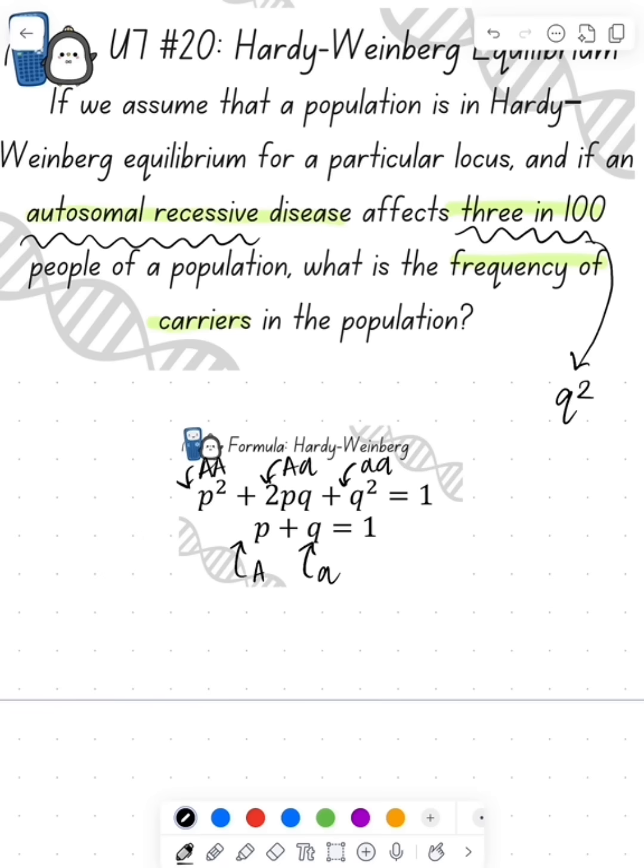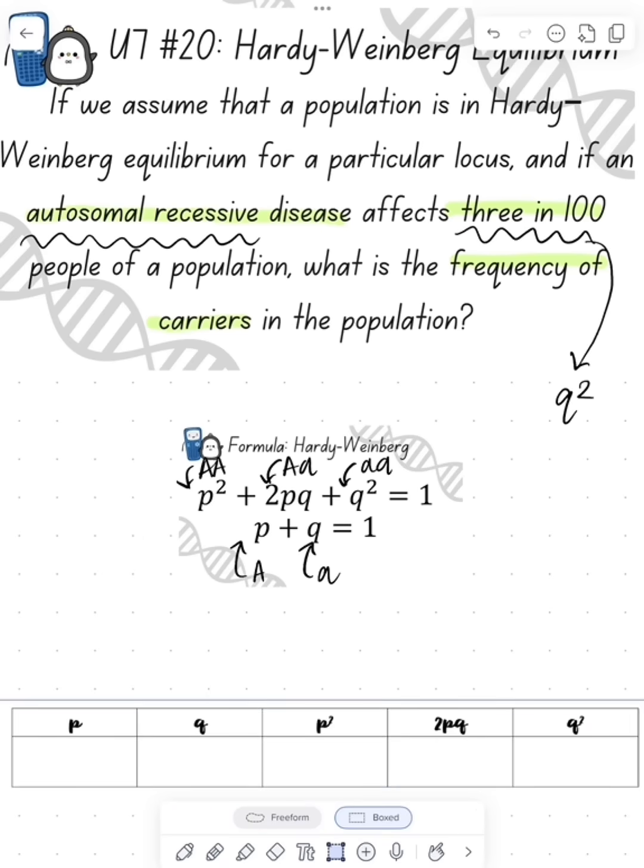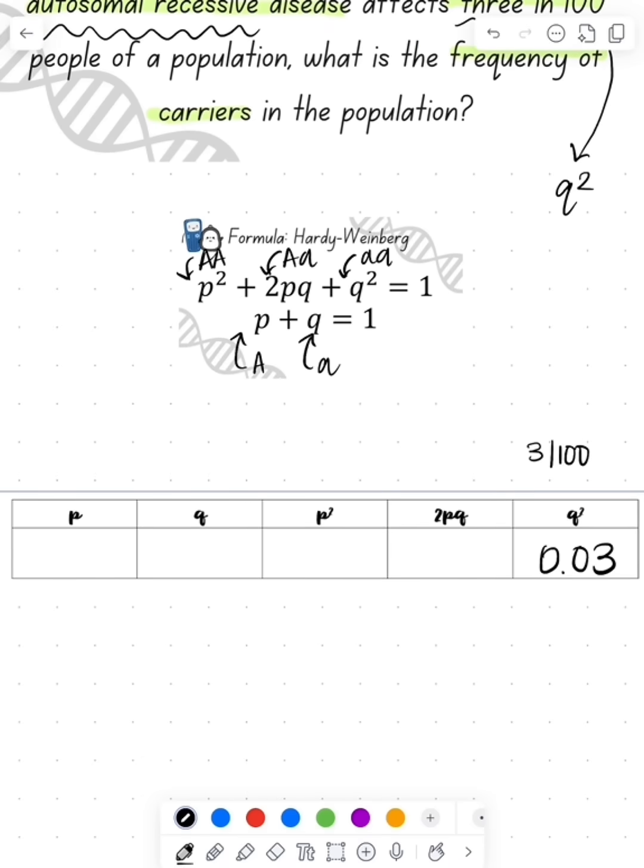So if we look at the question, we see that there is 3 in 100, which means that is the genotype frequency. So that would be my q squared value, which we always want to start with q squared. So we fill in our q squared of 0.03.